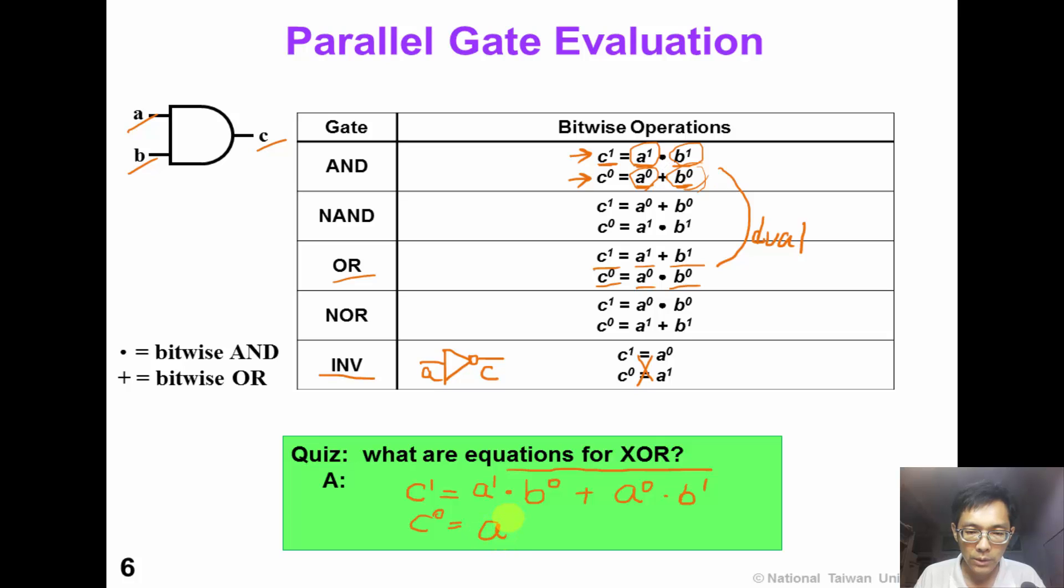For C to be 0, we can have A1, B1, or A0, B0. This is our answer.